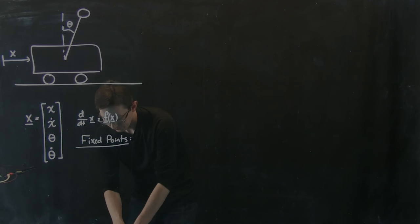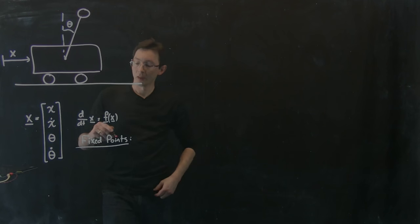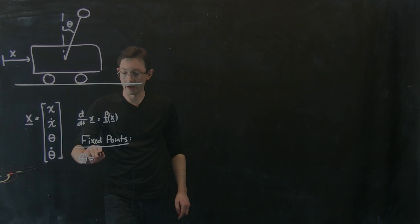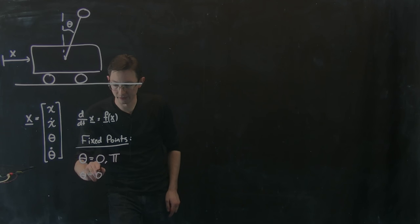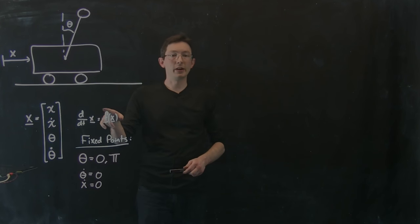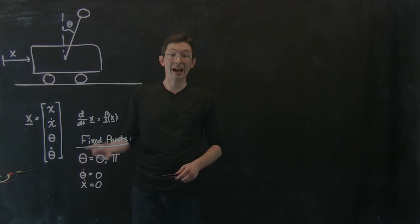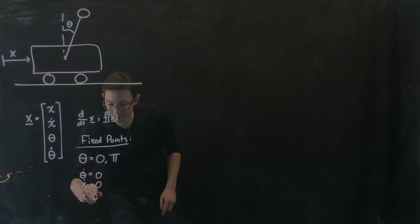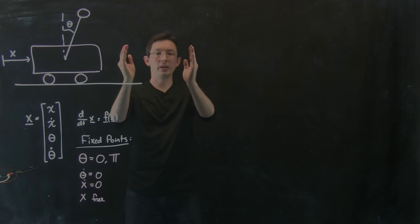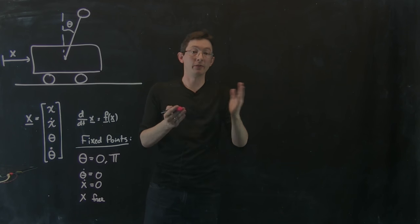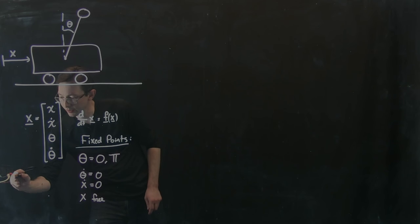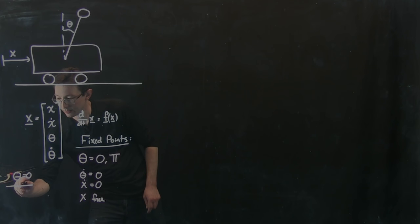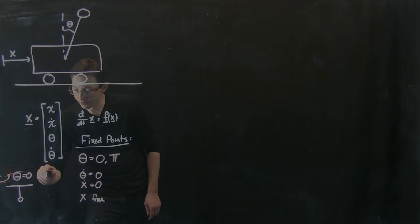Intuitively we know there are a couple of key fixed points. The fixed points correspond to: theta equals 0 for the pendulum down, or theta equals pi for the pendulum up. Theta_dot has to equal 0, x_dot has to equal 0, and x itself is a free variable — none of the rates of change depend on x. So it doesn't matter where the cart is; if the pendulum is up or down with no velocities, it's a fixed point.